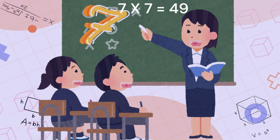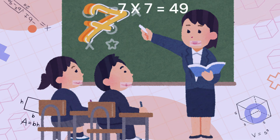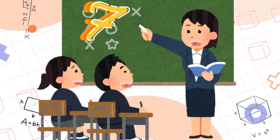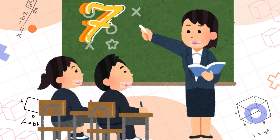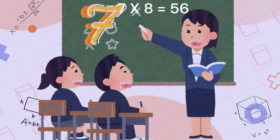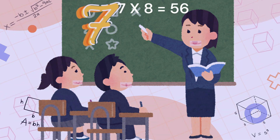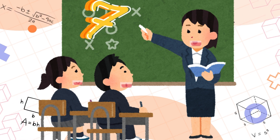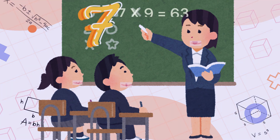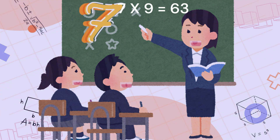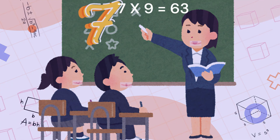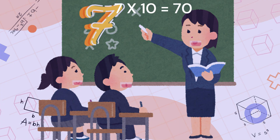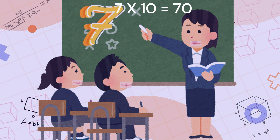7 sevens are 49, 7 eights are 56, 7 tens are 70.